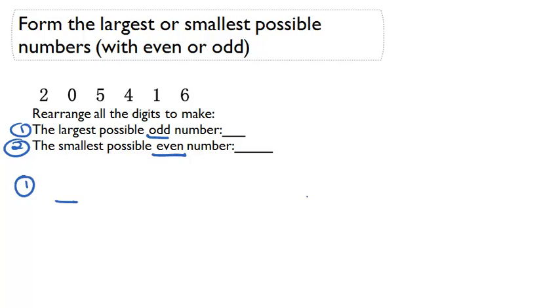So let's try to do one. We have a six digit number. We want to make it odd, so we know that we need to put an odd digit here. We want to make it large, so we have to put our largest numbers to the left.